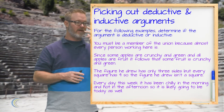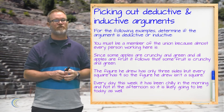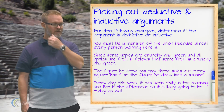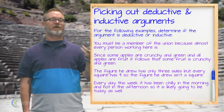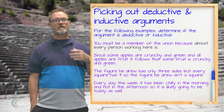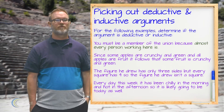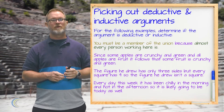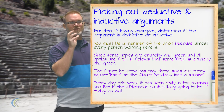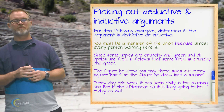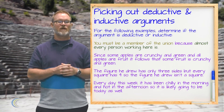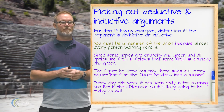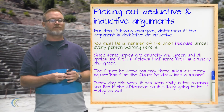Given all that, our first example says: you must be a member of the union because almost every person working here is. The indicator that this is inductive is the word 'almost.' Because it's only almost every person, you could be one of the ones who isn't a member. The premises only support the likelihood of the conclusion, so this is an inductive argument.